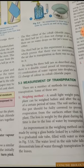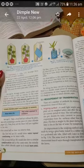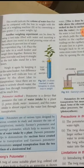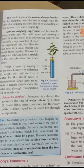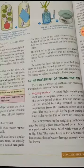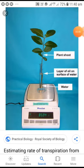Measurement of transpiration — there are two methods. One is the weighing method, which is also of two types: one is the normal weighing method, and another involves using a shoot inserted in water to show the loss in weight. The second method is called the potometer method.